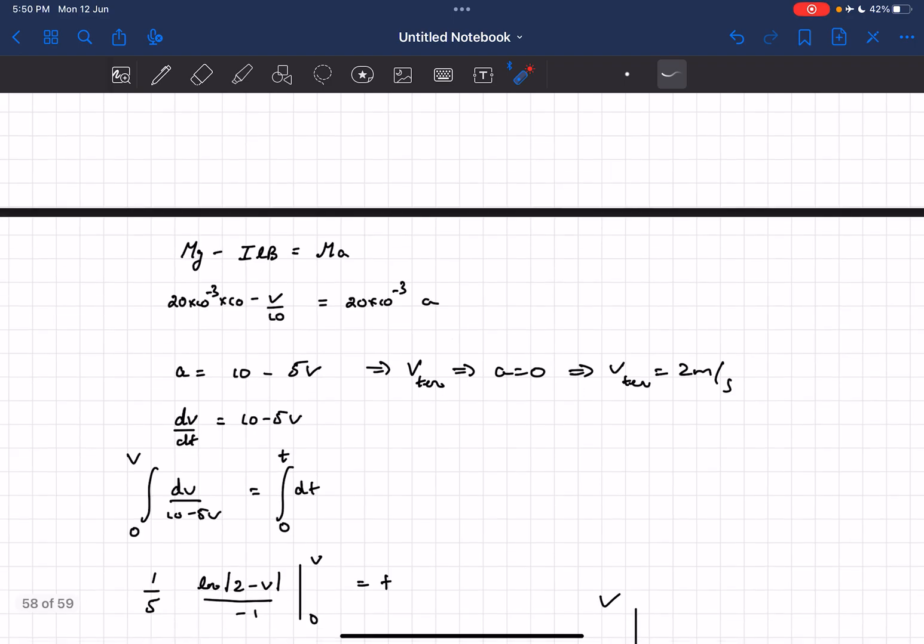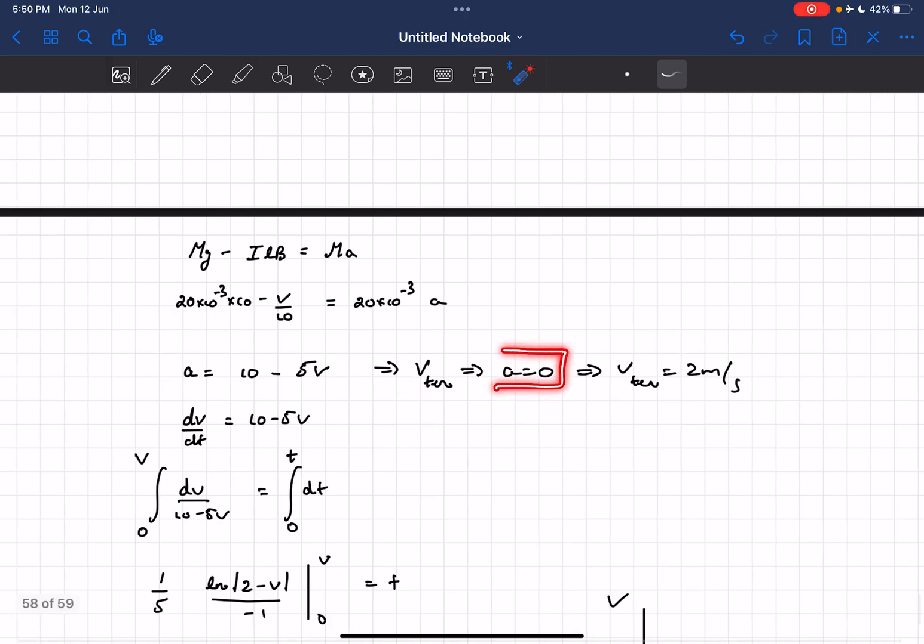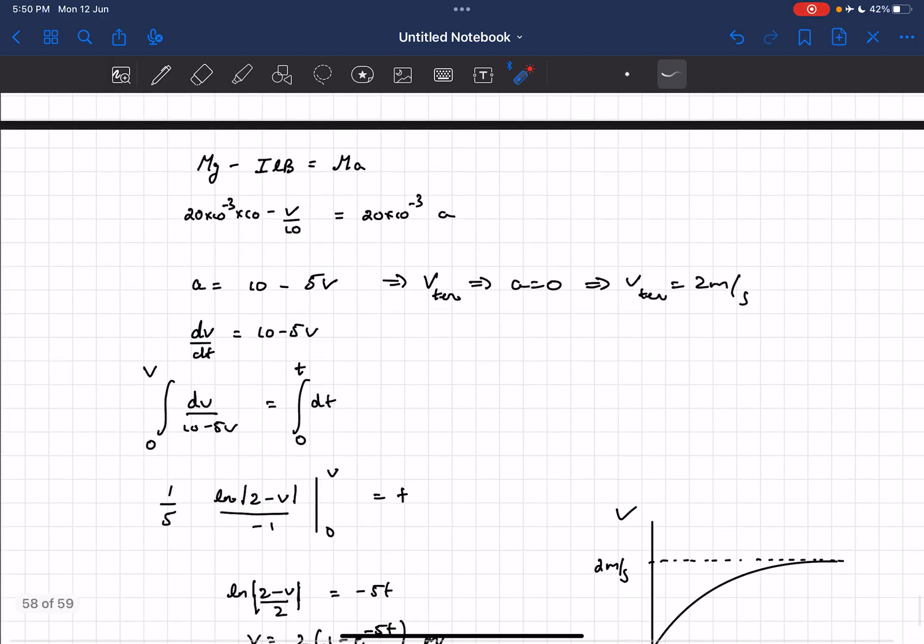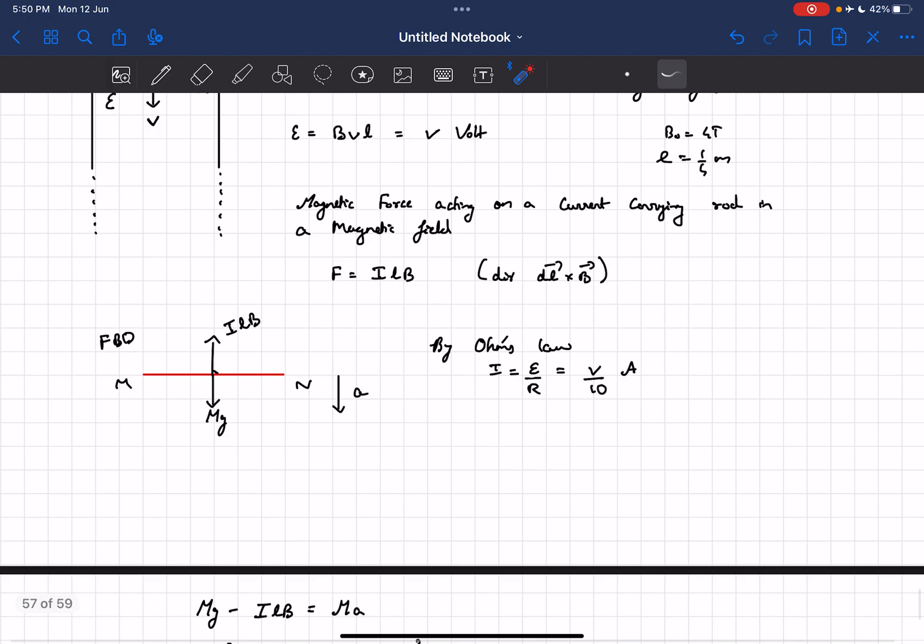Substituting all the values we'll get a simple relation for the acceleration and velocity as a equals 10 minus v/2. Now when we mean terminal velocity it means the acceleration of the rod would become zero, so if we set the acceleration as zero we'll get that terminal velocity as 2 meter per second, and that was what was asked in the fourth part.